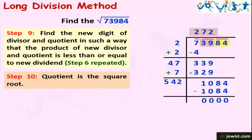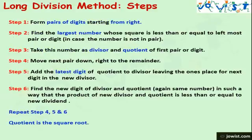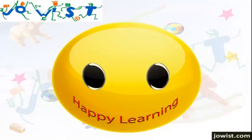The quotient is the square root. We have 272 in the quotient, so the square root of 73,984 is 272. Let's recap the steps of the long division method. These steps are given in the PDF file attached to the lesson. Please take a print for your reference. Happy learning!